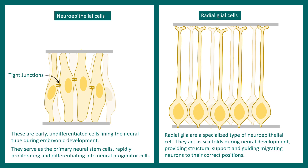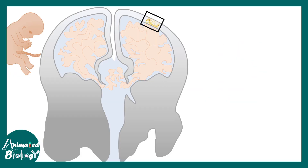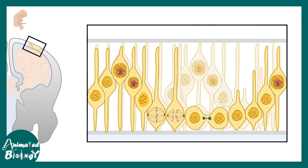These neuroepithelial cells or radial glial cells in the human brain show a typical cell migration behavior known as interkinetic nuclear movement. In order to understand the process of interkinetic nuclear movement and cell division during the generation of radial glial cells, we have to take a step back. We are looking at one section of the early embryonic brain.